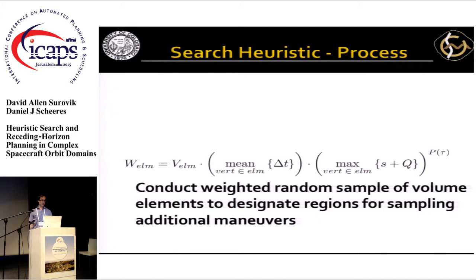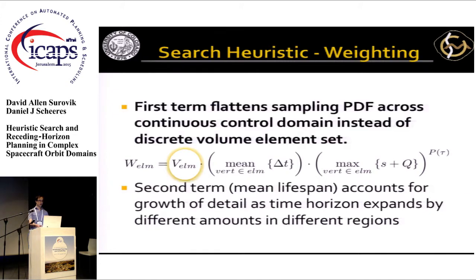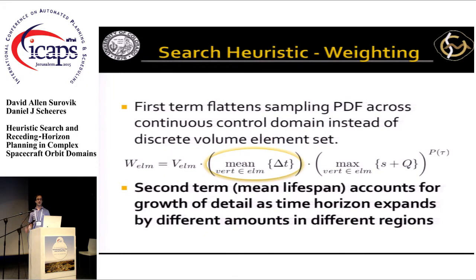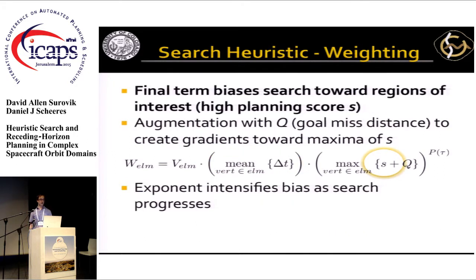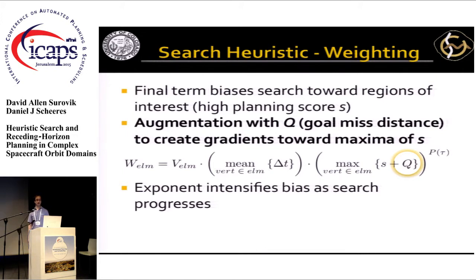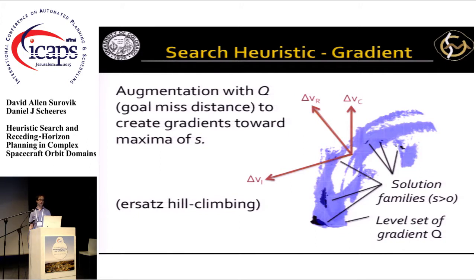The heuristic is the weighting on those volume elements. The first component is simply the actual volume of the elements, so each point in the continuous space is equally likely to be sampled. The next component distorts that probability distribution based on the lifespan of the trajectories: the longer-lived a trajectory is, the more complexity can arise in that region of the reachable set. The third term biases the search towards regions where the planning score S is higher, augmented with a goal missed-distance Q that helps gradients guide the search heuristic toward good regions of S.